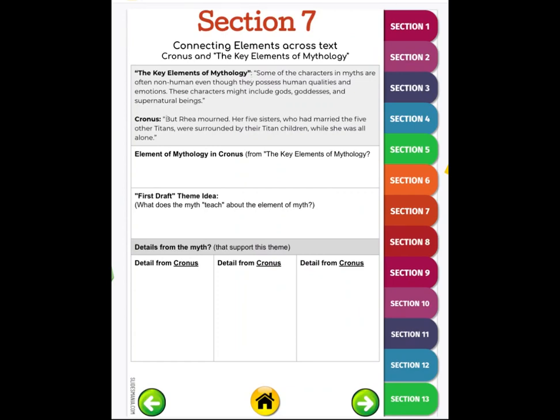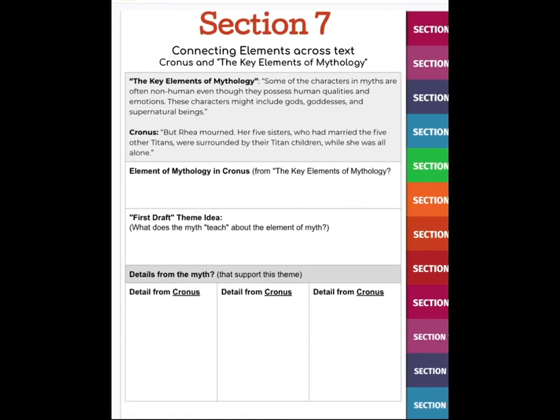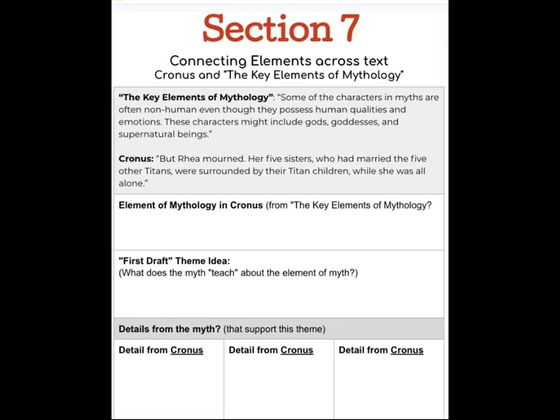By reading The Key Elements of Mythology, that informational text will help us understand the literary text of Cronus. That's also going to help us come up with ideas for themes or details that support that. We're going to do this one together so you understand what the assignment is.